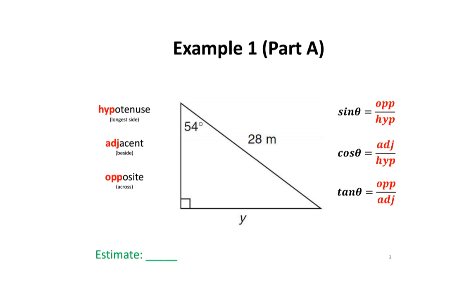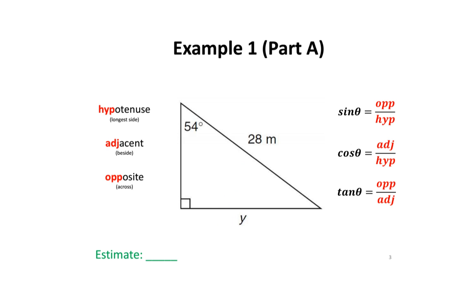In our first example, we have a right triangle. We are trying to find Y — in other words, we want to find the length of this side. Before doing any calculations, let's make an estimate. If this side is the hypotenuse and it's 28 meters, that means this side must be less than 28 meters, since the hypotenuse is always the longest side. It doesn't look that much shorter, so I'm going to say it looks approximately 25 meters. This is just an estimate.